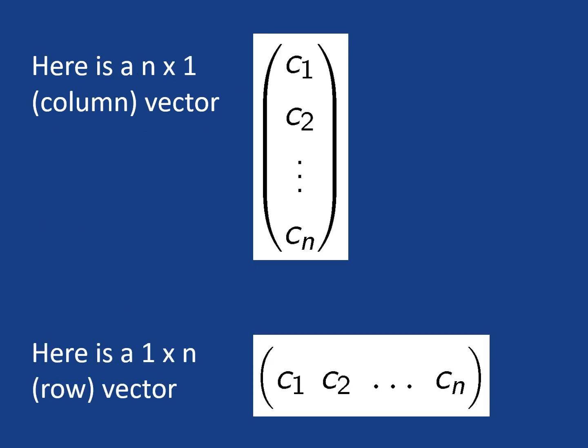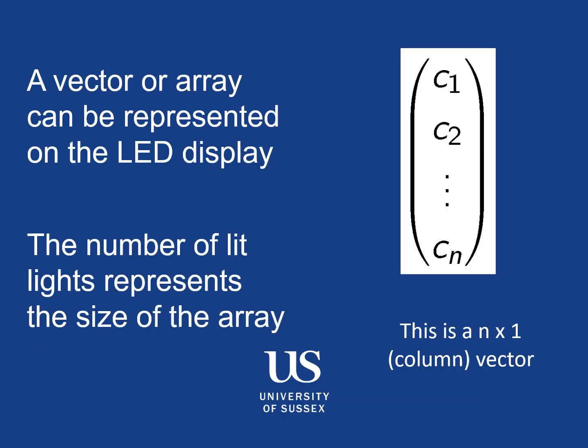So for example, here this is an n by one column vector on the top. And on the bottom, there's a one by n row vector.